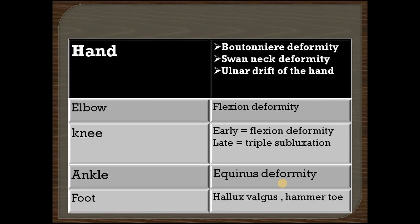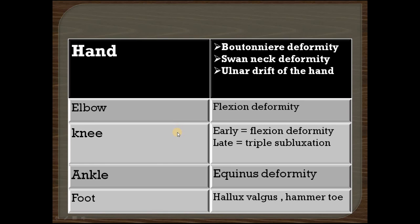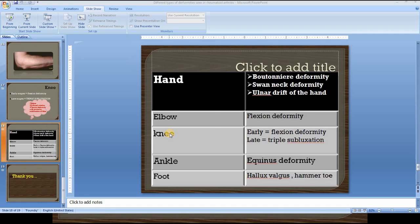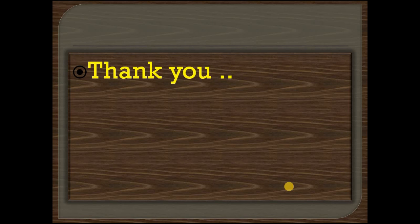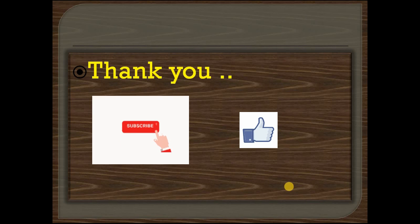Quick revision of all deformities: In the hand — boutonniere deformity, swan neck deformity and ulnar drift. In the elbow — flexion deformity. In the knee — flexion deformity in early stages, triple subluxation in late stages. In the ankle — equinus deformity. In the foot — hallux valgus and hammer toe. If you liked this video please like, share and subscribe to my channel, press the bell icon to get notified. Stay healthy, stay fit — thank you!